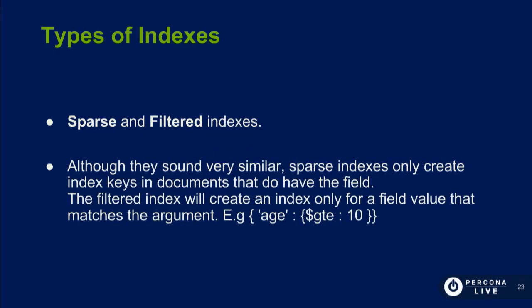We have sparse and filtered indexes. They seem very similar but there's a big difference. A sparse index only indexes documents that have the field — it filters the value before creating the index entry. So for a sparse index, if a document doesn't have the field name, it won't be indexed. For a filtered index, you can filter more specifically — for example, only index users older than 10 years — making the index smaller and using less disk and memory, purely for performance.